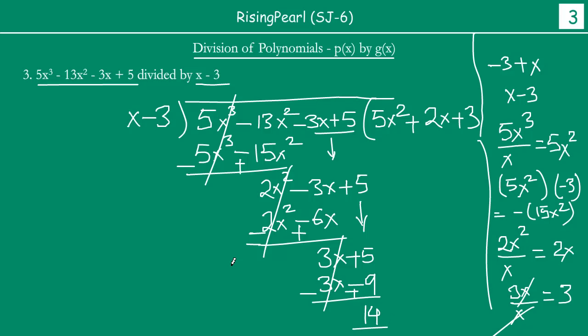So the division process stops. So at this point we notice that our quotient here, that is 5x square plus 2x plus 3, that is sum of all these terms. That is our quotient. And in this case we saw we have a remainder 14. So this was our third example of a long division.